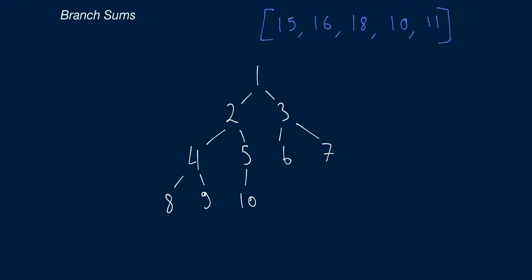Hey everybody, welcome to AlgoExpert. In this video, we're going to be covering the question of the branch sums. This is a pretty straightforward question. You have to write a function that takes in the root node of a binary tree — in the example here, the root node would be the node with value 1 — and this function has to return a list of all of the branch sums in this binary tree.